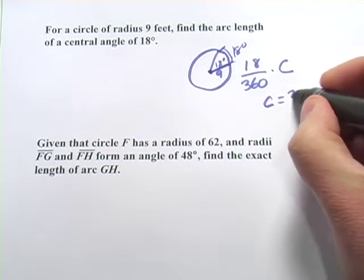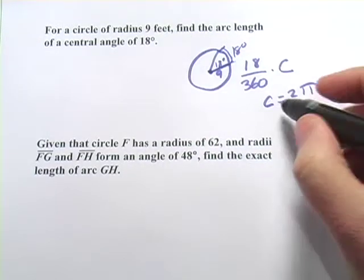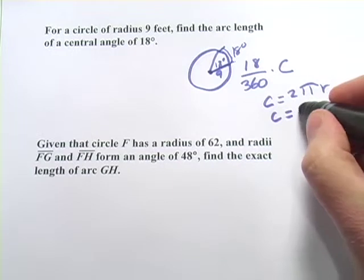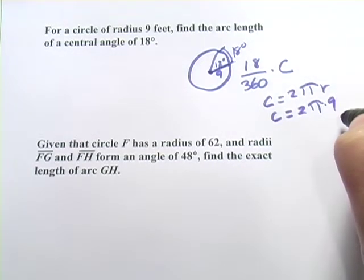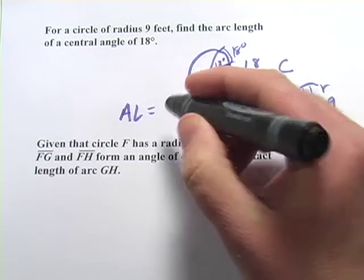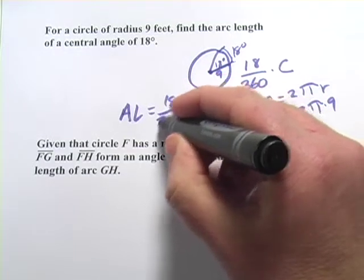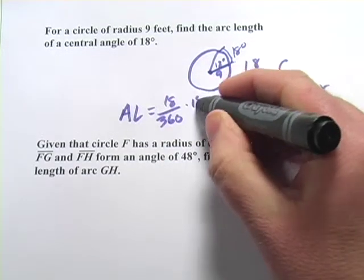We know that circumference equals 2 times π times r. They're telling us that the radius is 9, so the circumference equals 2 times π times 9, or 18π. So we can rewrite this as the arc length equals 18 over 360 times 2 times 9, π times 18π.